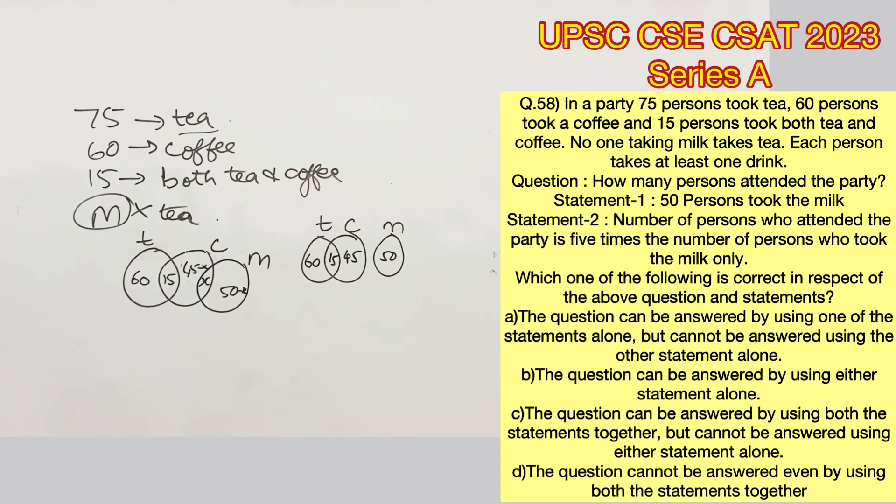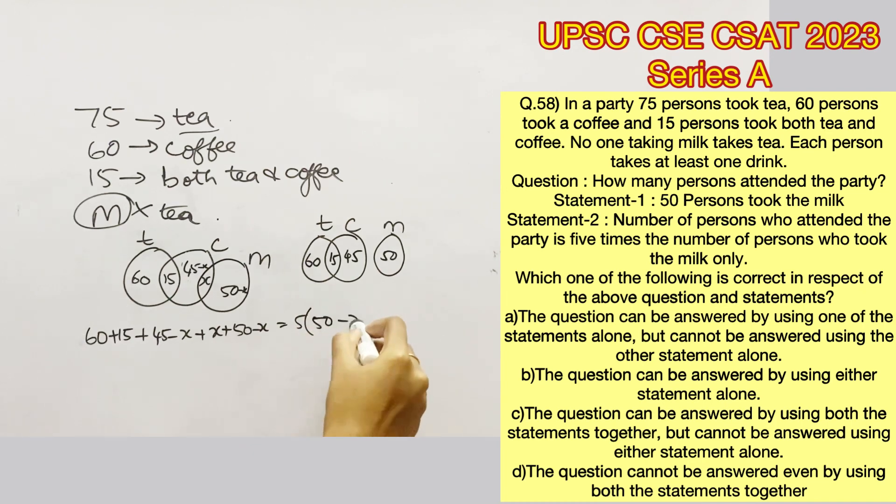So to find the total number of people who attended the party, we have to sum all these up, which will give us 60 plus 15 plus 45 minus X plus X plus 50 minus X. Statement 2 says it's 5 times those who chose milk alone, which is 5 times 50 minus X.